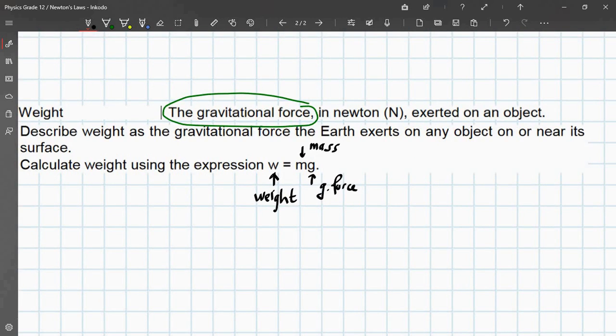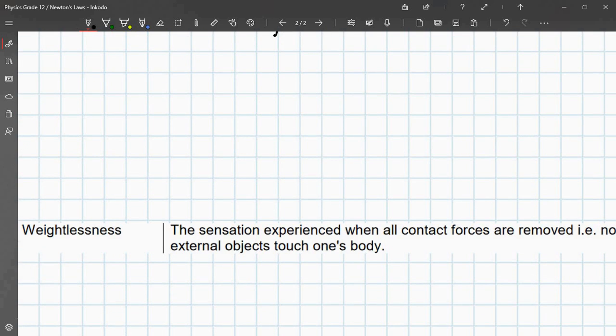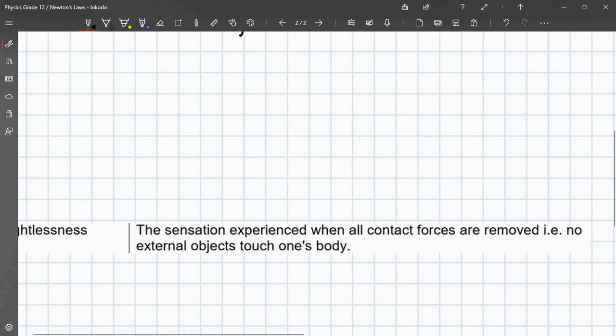So, your weight can change depending on the planet you are. Weight is commonly misused in modern society. A lot of people will ask, what's your weight? And then you say it's, I don't know, 50 kilograms. But, weight is actually measured in Newtons. Your mass is 50 kilograms. Your weight will be 50 times 9.8. So, that's a simple definition of weight and mass that you should keep in mind. That will be used later on in Newton's gravitational force.